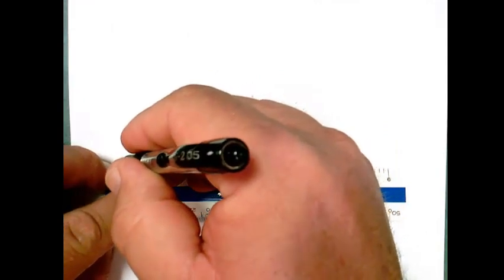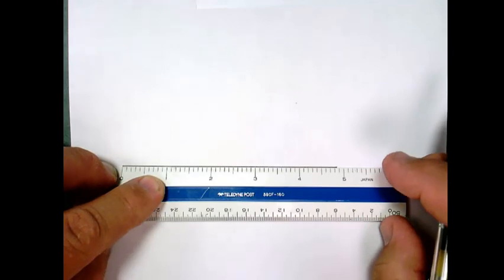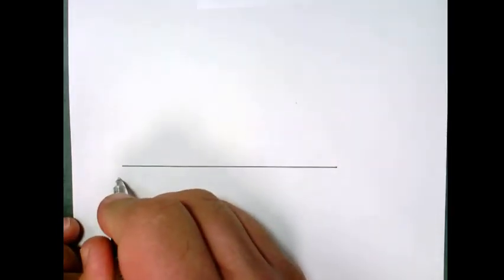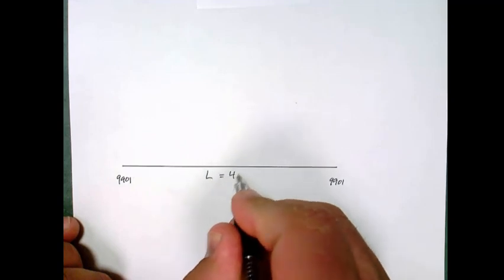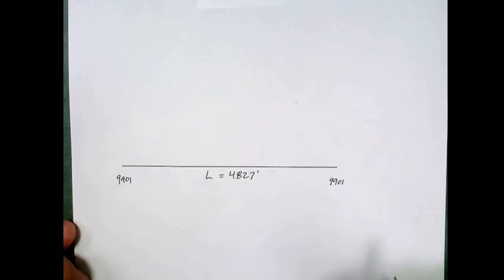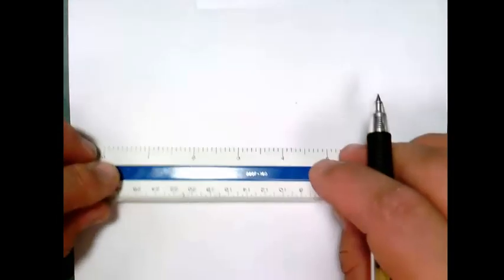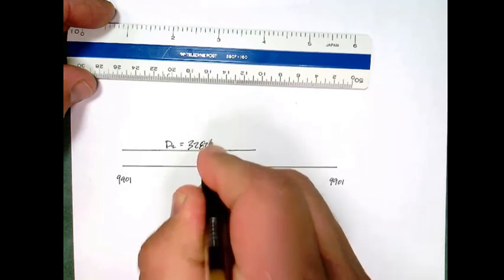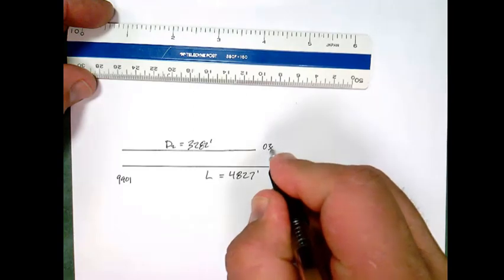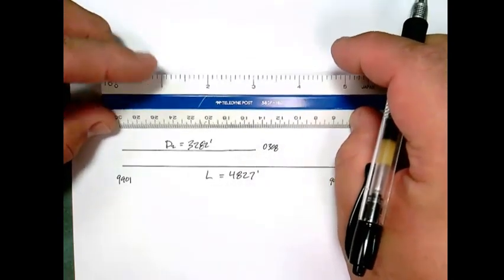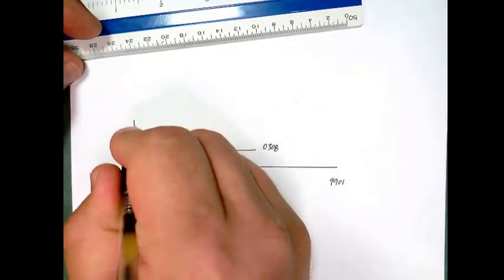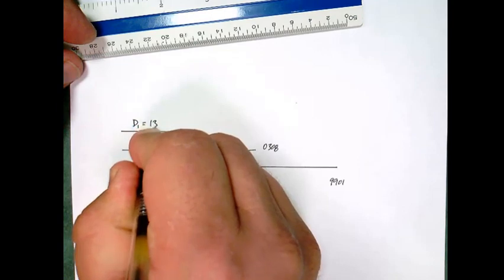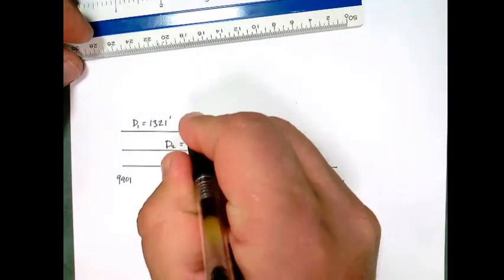So based on our measurements we know that the length of our circuit is 4827. So from 9901 back to 9901 our total length is 4827 feet. We also need to consider the distance from the beginning of the circuit to point 9902 and then also to 0308. 3,282 feet from 9901 to 0308. And then the distance from the beginning of the circuit to 9902 was 1,321 feet and that is to 9902.